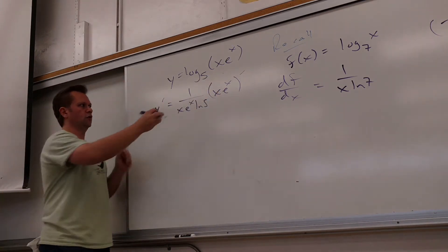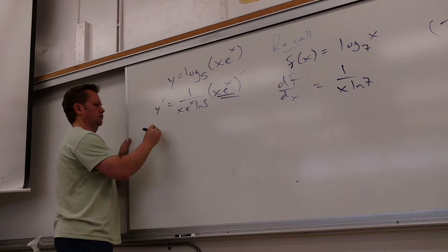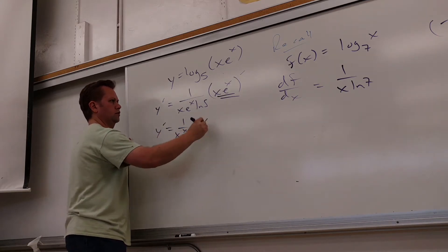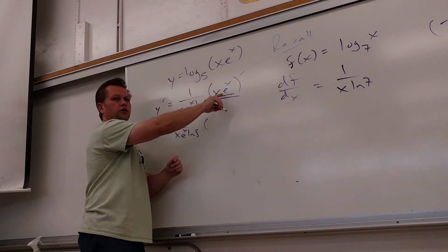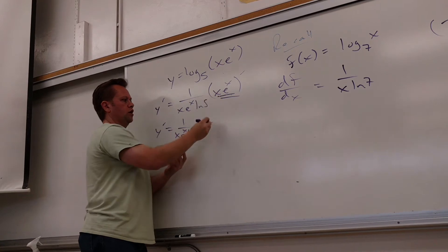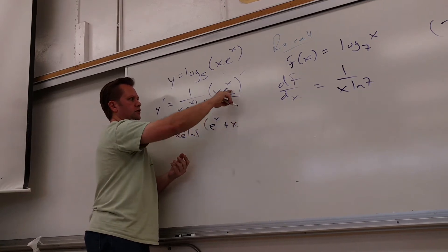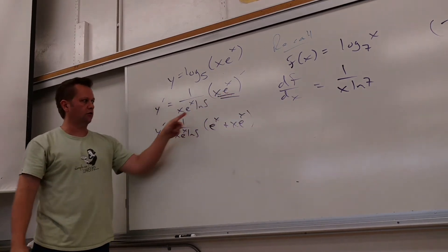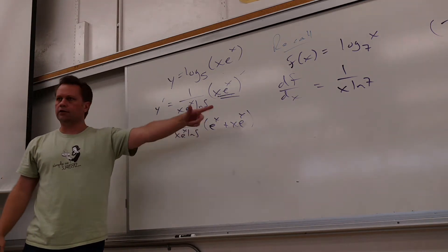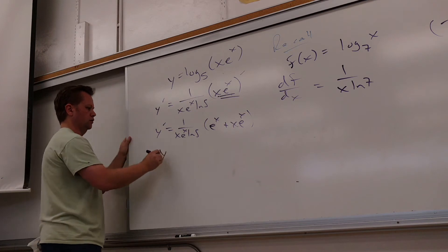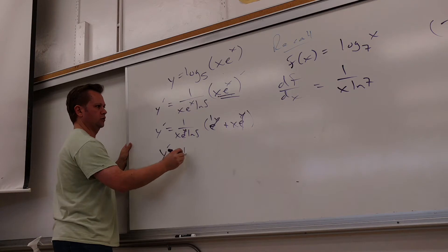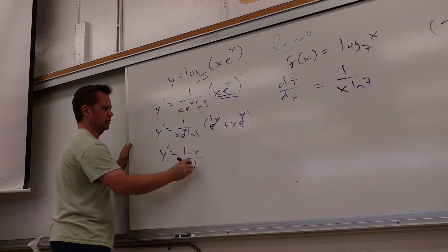Alright, and then what's the inside derivative? Product rule — yeah, good. Product rule here. So then I would get 1·eˣ + x·eˣ. I like it. Now I'm basically done, just throw that on top. You can factor an eˣ out, right? Y prime — you get (1 + x) over (x · Ln5).